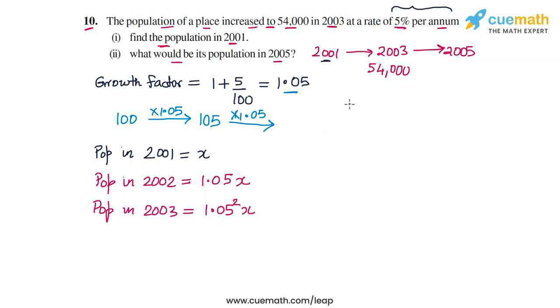So this is actually similar to the compound interest formula. If you compare this expression to the compound interest formula, you will have the initial population x times 1 plus the rate of growth 5 by 100, and two cycles of growth because from 2001 to 2003, there are two years that elapse. So this is what you get, 1.05 square times x. But we also know that the population in 2003 is 54,000. This is given to us.